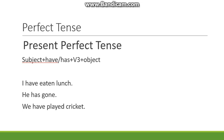'Have' is used with I, we, you, and they. 'Has' is used with third person singular — he, she, it, or any other name. For example: 'He has gone.' 'We have played cricket.' This is the present perfect tense.